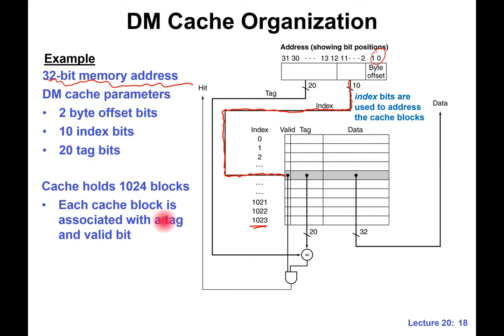The cache has 1024 blocks, and each block has a tag and a valid bit stored alongside the data. In this case, each data block has four bytes. A student asks what happens to the offset bits — we'll talk about that with a concrete example shortly.